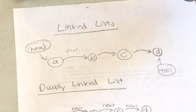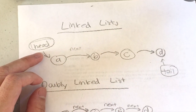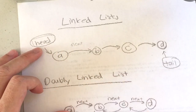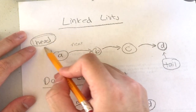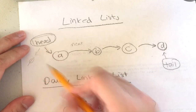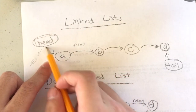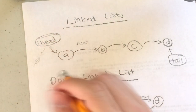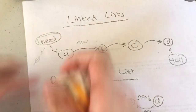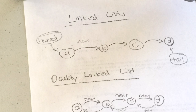If you have a head pointer and the head is null — meaning it points to nothing — that tells you the whole linked list is empty. If the head points to something, the list is not empty. So if your head pointer is null, your linked list is empty.